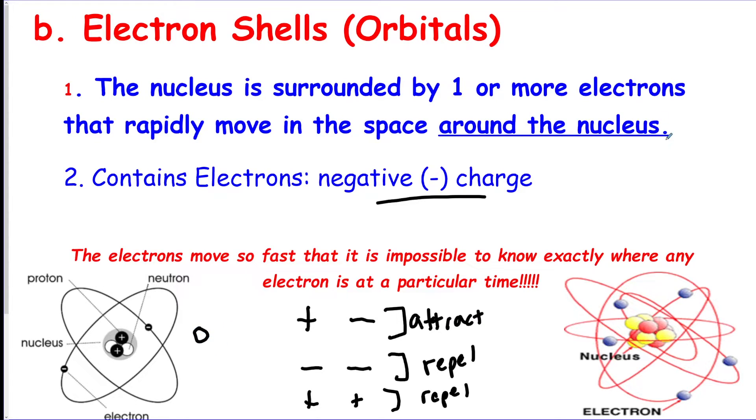If we draw a quick little sketch of an atom here, we're going to have our nucleus like that. Inside is going to be our protons and our neutrons, which have no charge, so I'll just put them like that.